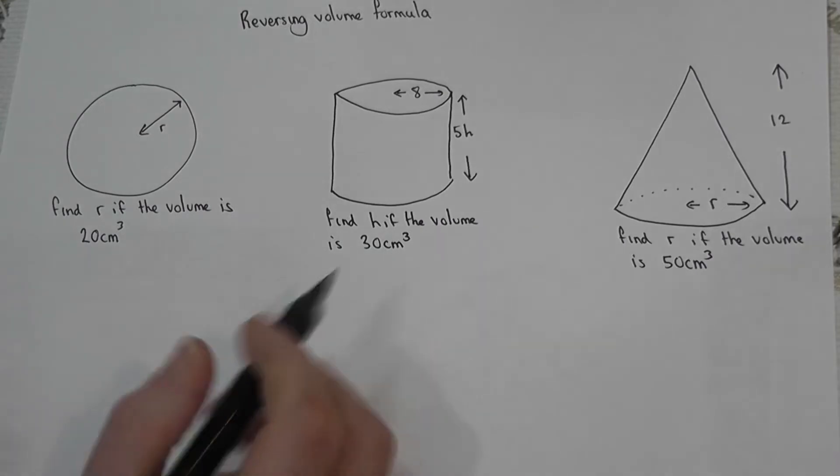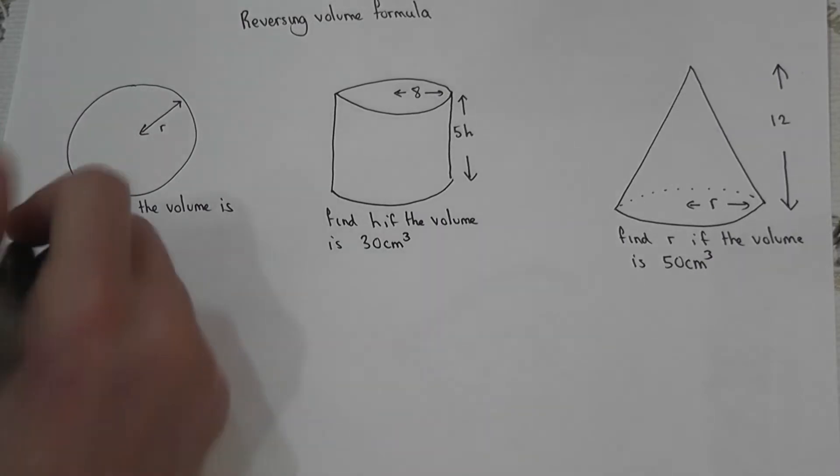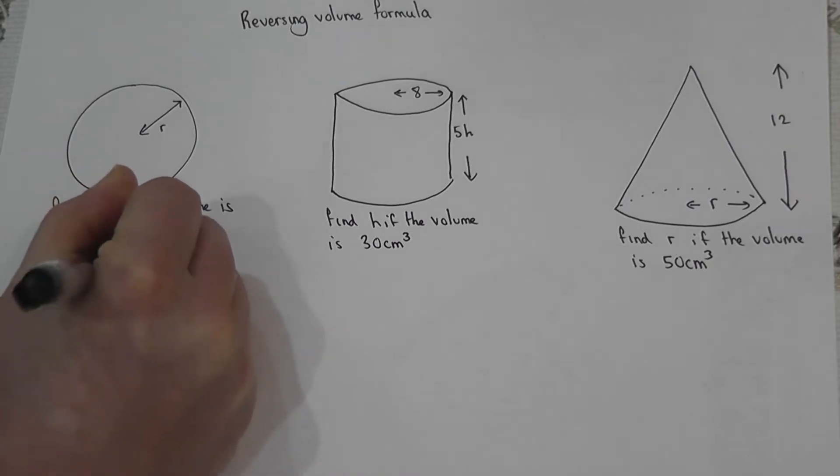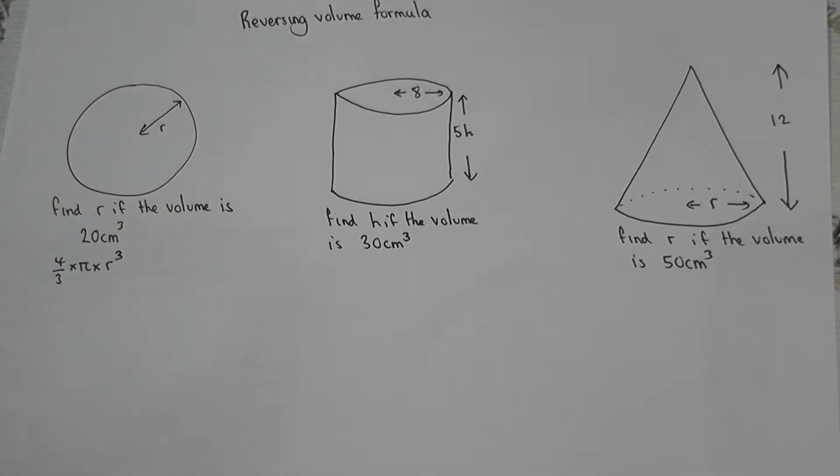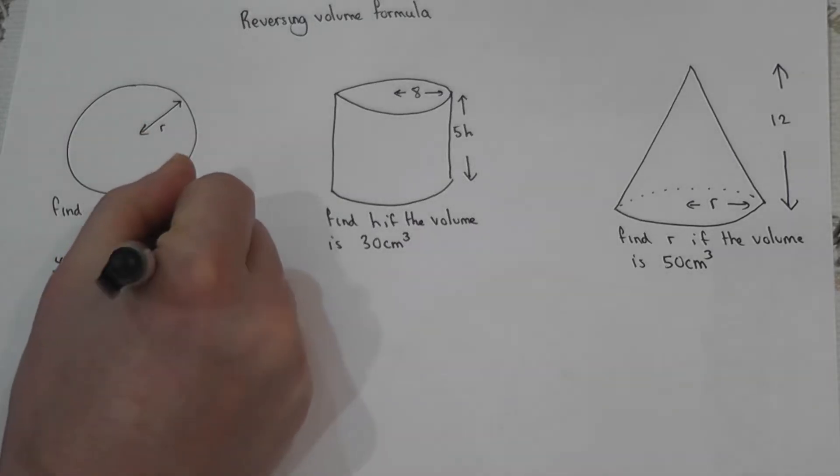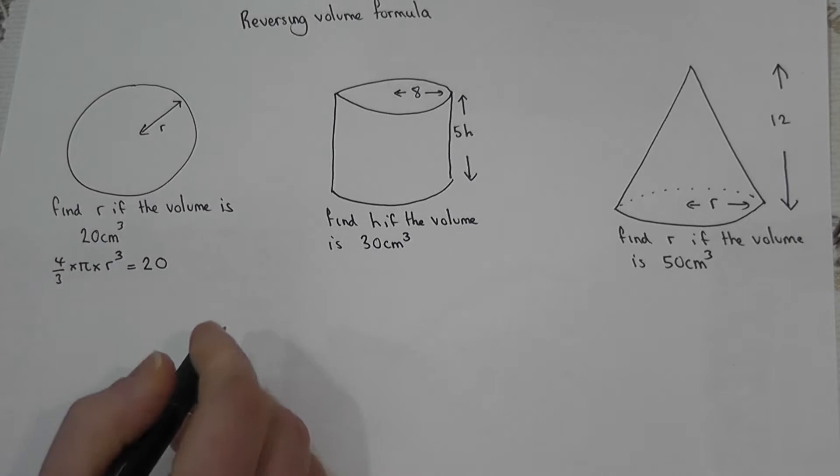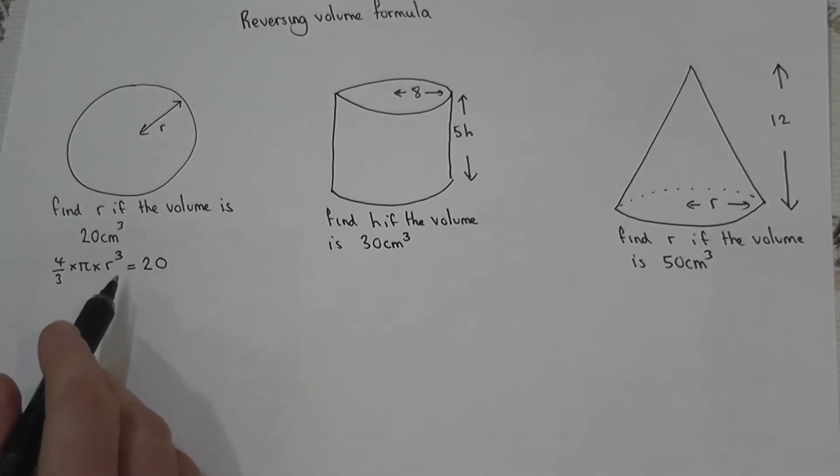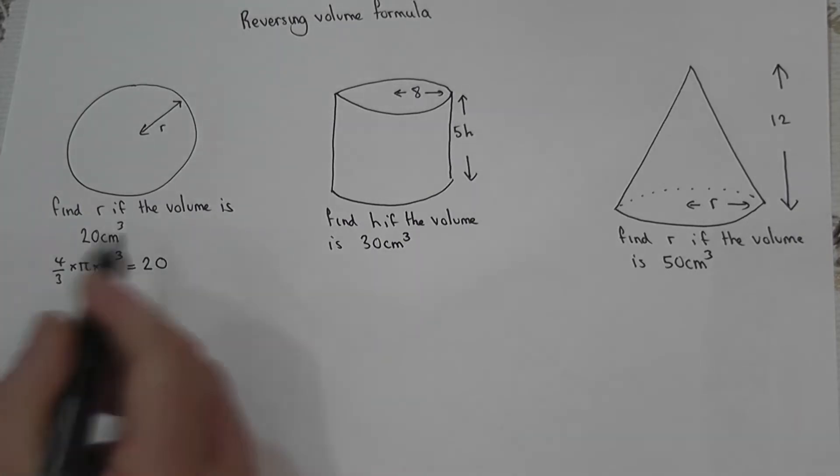Okay, so for the sphere, we know the volume of the sphere is 4/3 times pi times r cubed, and the answer of this has got to equal 20. We've got to reverse this to work out what r is, and to do this we do the reverse operations step by step.